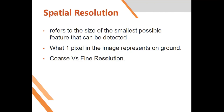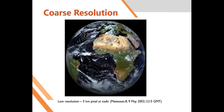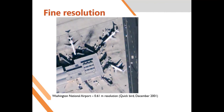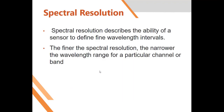If you're using it for mapping, you cannot map objects that cannot be seen below 30 meters. When we look at resolution, we have coarse resolution — for example, a satellite image at 5 kilometers resolution, which is very coarse and used to map the world at a very large scale. We can also have fine resolution — for example, this is Washington National Airport at 0.61-meter resolution, a QuickBird image taken in December 2001, which is a very fine image.